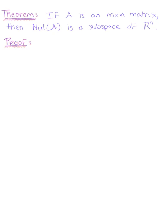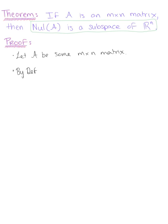Our first important theorem of the section: if matrix A is an m by n matrix, then the null space of matrix A is a subspace of ℝⁿ. We need to go ahead and prove this. Let A be some m by n matrix, and keep in mind that by definition, the null space of matrix A is defined as the set of all vectors x such that x is in ℝⁿ and A times x equals the zero vector. This will be important as we show the three properties of a subspace hold true.